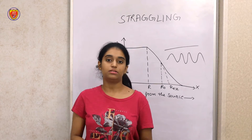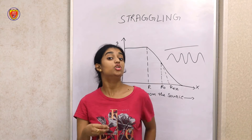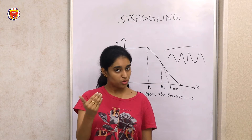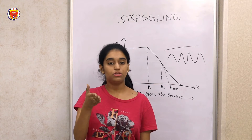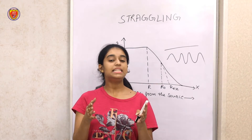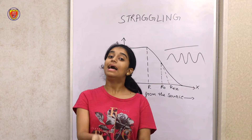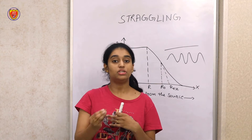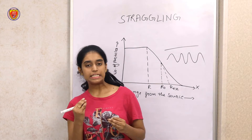Now let's talk about the second factor. Whenever an ion loses its energy, there are some fluctuations. The second factor is that when there are collisions, there are fluctuations in the energy lost by the ion, as well as fluctuations in the number of collisions per unit path length.